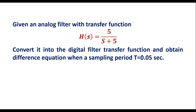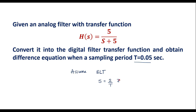Here H(S) is the transfer function of the analog filter, which is given. Now we are supposed to convert this into a digital filter. The sampling period T is given as 0.05 seconds. I will assume bilinear transformation (BLT) to convert the analog filter into the digital filter. In bilinear transformation, S is replaced by (2/T) * (Z minus 1) divided by (Z plus 1).